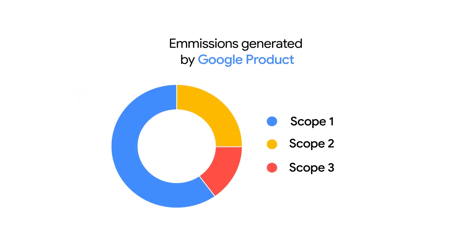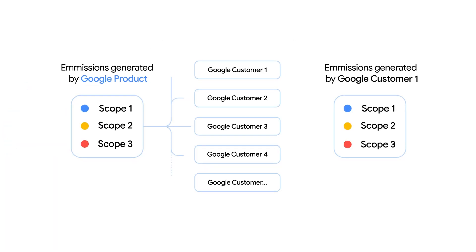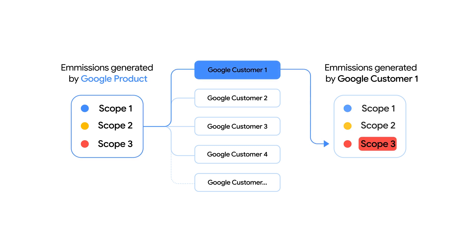Google breaks down our emissions to give more insights to our users. As we apportion Google's emissions to each customer, you should report all of these as your scope three emissions.